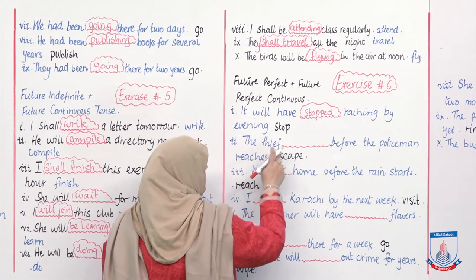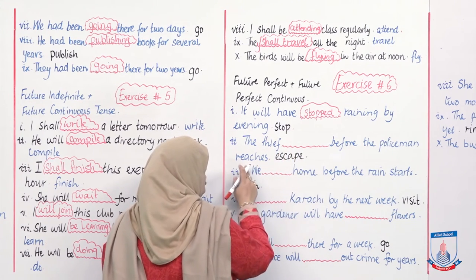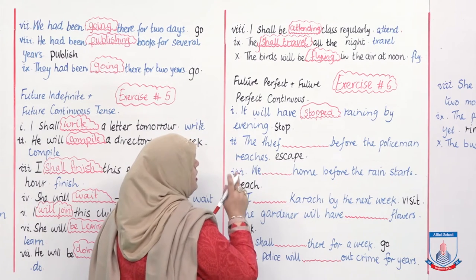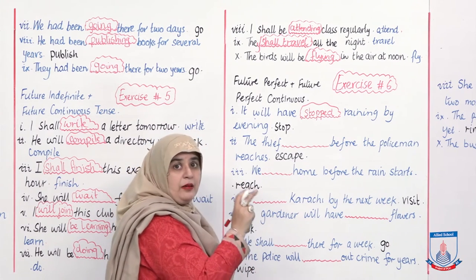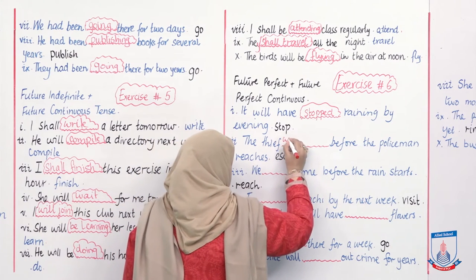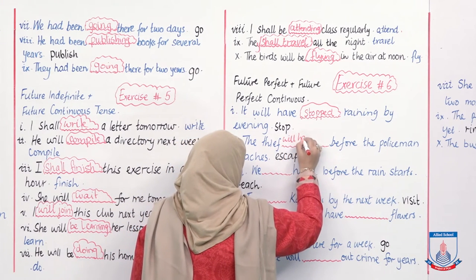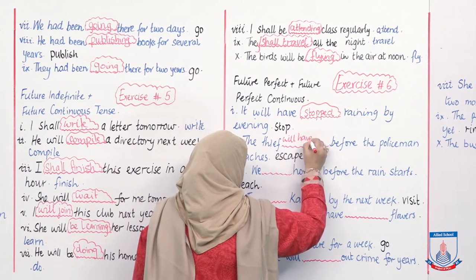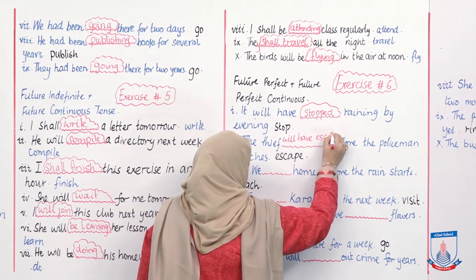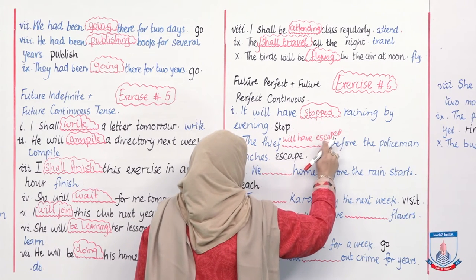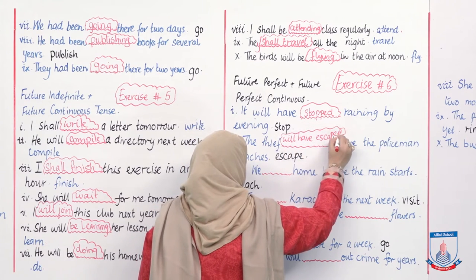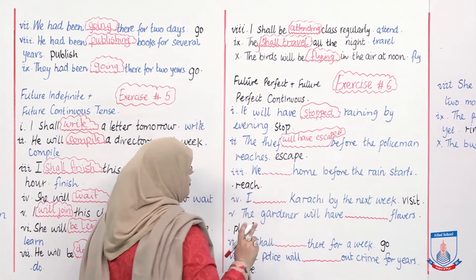'The thief ___ before the policeman reaches.' Answer: 'The thief will have escaped before the policeman reaches.' Future perfect — will have + third form.